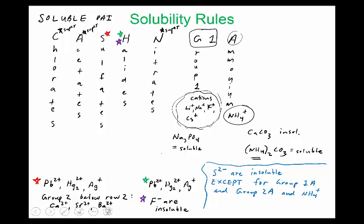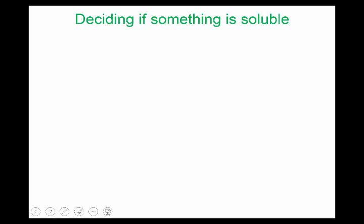Before we start writing net ionic equations, it's important to go over these, so spend some time, maybe make some flashcards. It might be helpful to actually look at this when you're deciding if something is soluble. I have kind of a mental checklist. The first thing is to ask: is it a group 1A or ammonium?